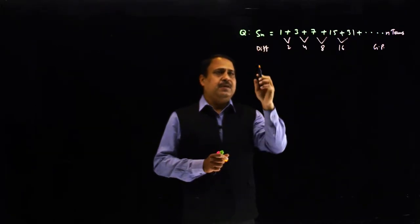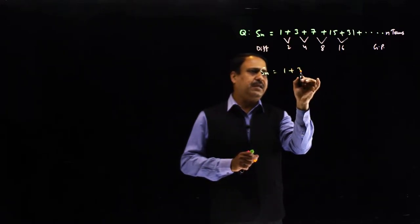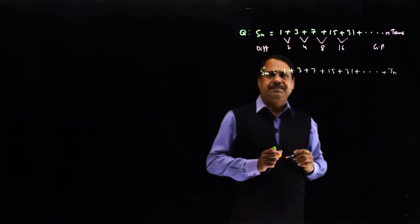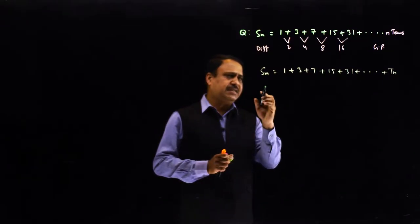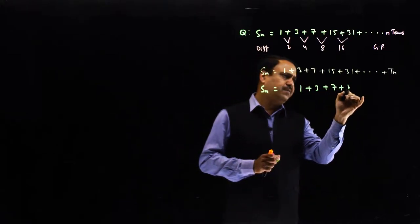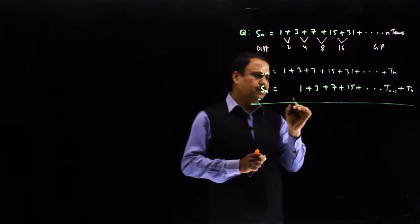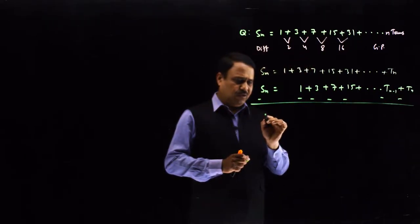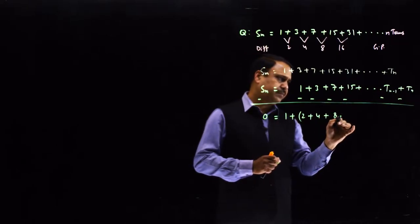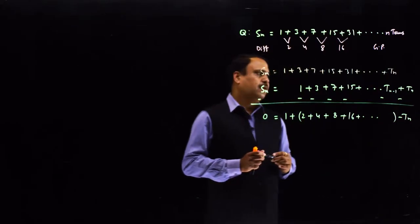When differences are in geometric progression, the method is: Sₙ equals — write the series as it is: 1 plus 3 plus 7 plus 15 plus 31 plus the nth term. Then repeat the sequence shifted one place: Sₙ equals 1 plus 3 plus 7 plus 15 and so on, plus Tₙ₋₁. Subtract both, so the terms cancel and you get: 0 equals 1 plus 2 plus 4 plus 8 plus 16 and so on, minus Tₙ.